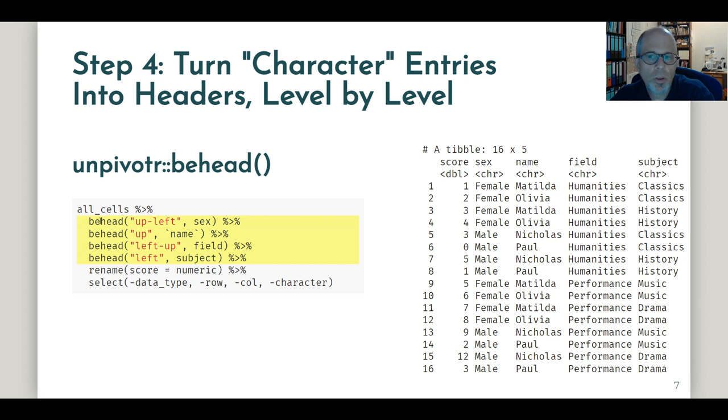How each level of headers is transformed into a tidy dataset or into a column in its own right. So we have the two outer levels of headers that contain the sex and field variables.